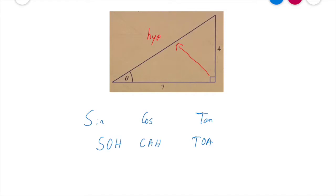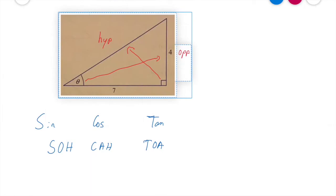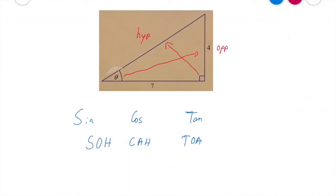Okay, now the side directly opposite our angle is known as the opposite, and the side between the right angle and the angle itself is known as our adjacent, A-D-J adjacent.